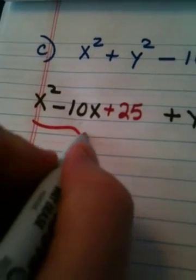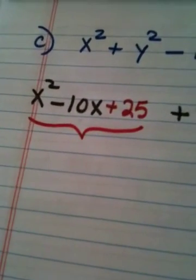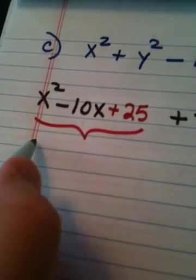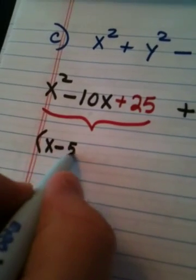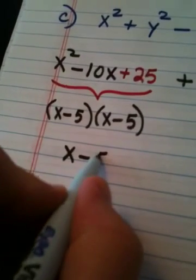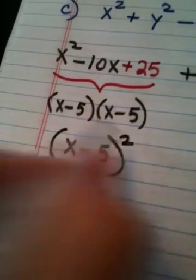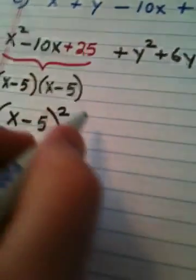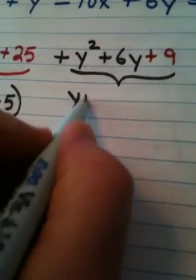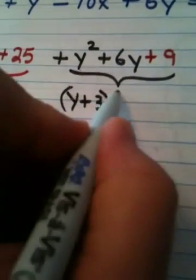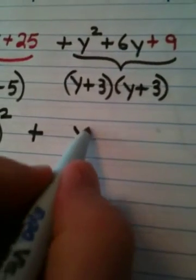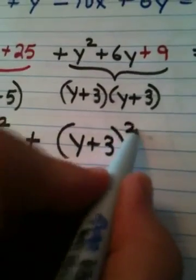Now, when I factor this expression, it turns out this is a perfect square trinomial. This becomes x minus 5 times x minus 5, which is really x minus 5 squared. We have a plus in the middle. This is also a perfect square trinomial. It becomes y plus 3 times y plus 3, which is really y plus 3 squared.